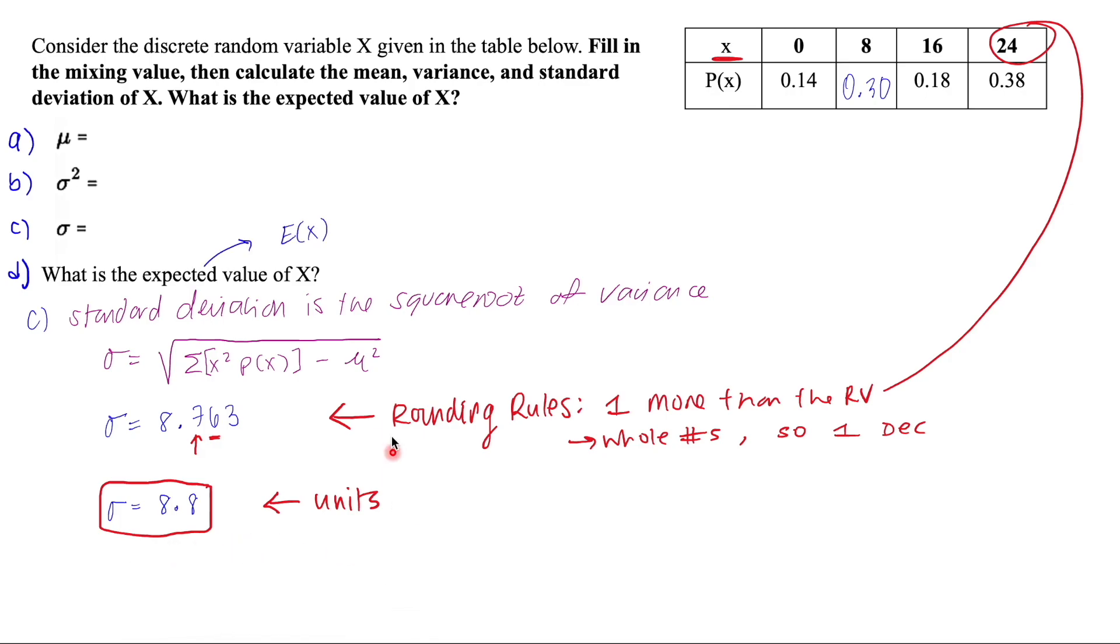Last but not least is that expected value of x, which we denote E of x, right? Probability would be P of x. Expected value is E of x. E parentheses, x parentheses. And remember that this is just equal to our theoretical mean. So this is our mu here, our population mean of 14.4. And again, you would finish with your units.